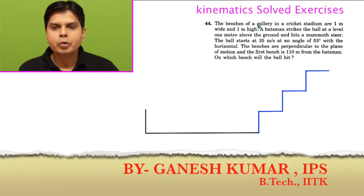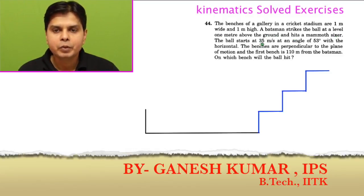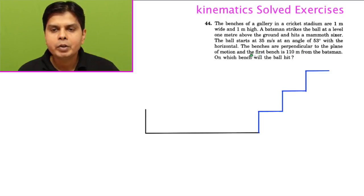Next question, question number 44. The benches of a gallery in a cricket stadium are one meter wide and one meter high. A batsman strikes the ball at a level one meter above the ground and hits a mammoth sixer. The ball starts at 35 meter per second at an angle of 53 degrees with the horizontal. The benches are perpendicular to the plane of motion and the first bench is 110 meters from the batsman. On which bench will the ball hit?